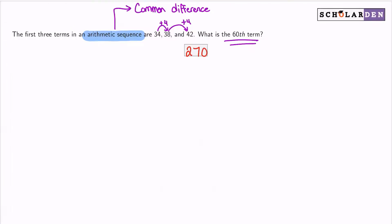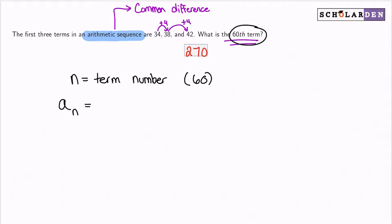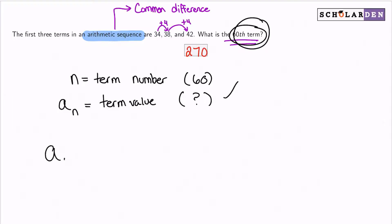Let's say n is the term number — in this case 60, since we want the 60th term. And a_sub_n is the term value, which is what the 60th term actually equals — that's what we're trying to figure out.